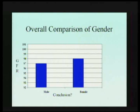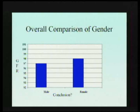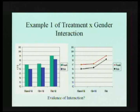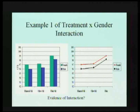It looks like females are reacting a little bit better. On the y-axis is GFR — glomerular filtration rate — basically a measure of kidney function. This interaction plot is actually what you should look at first: you want to see whether there's any difference in the pattern of response as a function of gender.